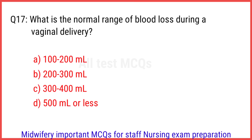Q17. What is the normal range of blood loss during vaginal delivery? The right answer is option D: 500 ml or less.